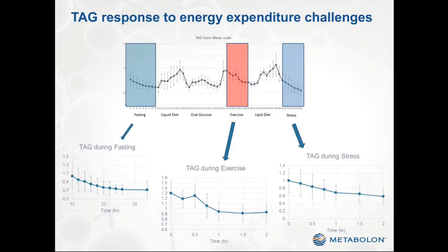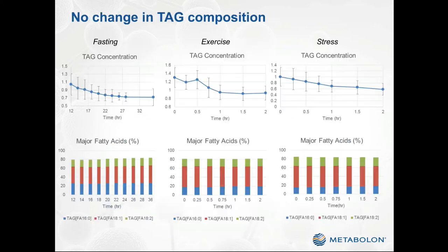Now let's look at three other challenges, all of which involved energy expenditure: fasting, exercise, and cold stress, which involved subjects putting their hands into a bowl of cold water for a specified period of time. We can see that triacylglycerol concentrations dropped during each of these challenges. However, when we look at fatty acid composition, there was no change in any of the three challenges. This makes sense because it reflects the idea that triacylglycerols are being used or taken out of circulation without regard to their fatty acid composition.